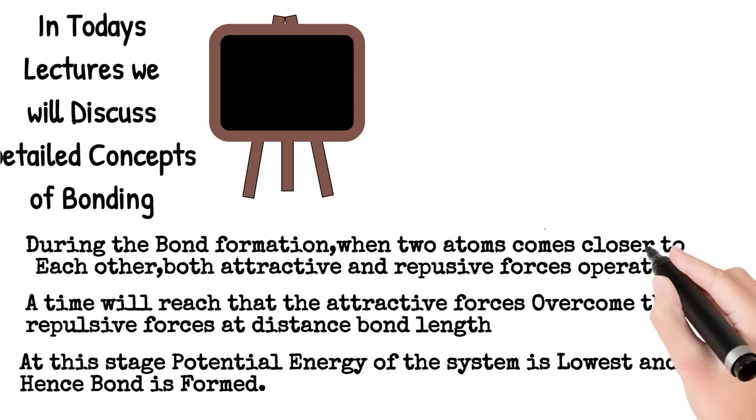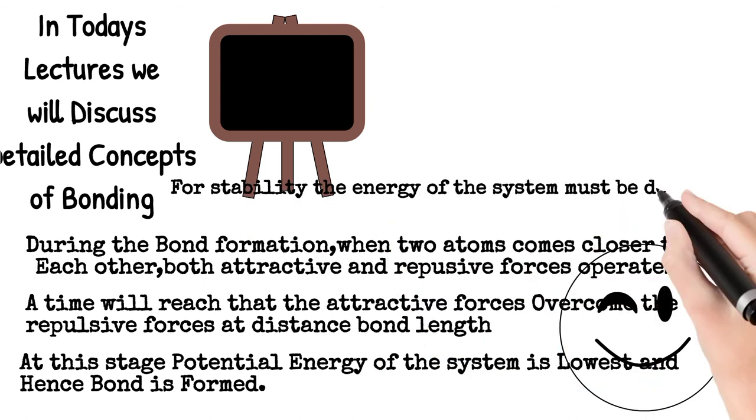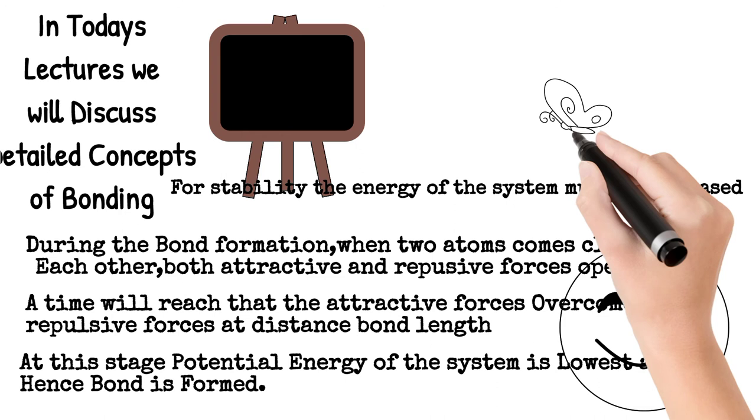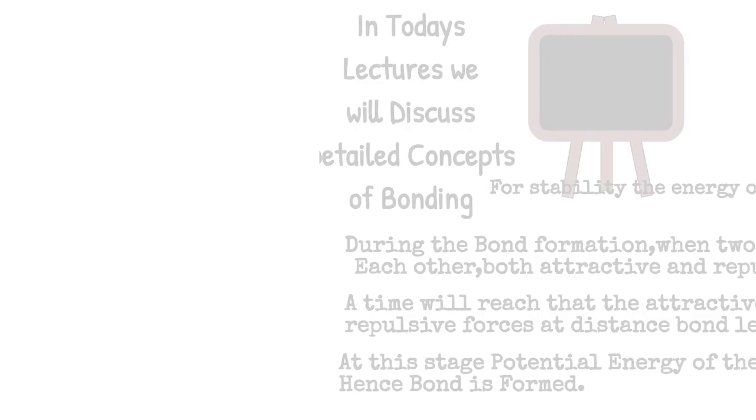At this stage, the potential energy of the system is lowest, and hence the bond is formed. Stability is inversely proportional to energy, so if energy decreases, stability increases. Bonds are formed for stability.